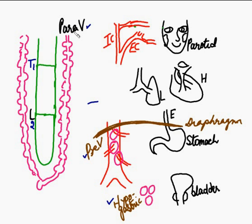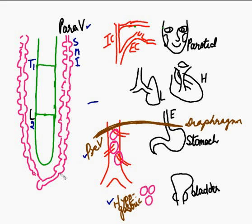Regarding the paravertebral ganglia, they are connected to the spinal nerves. In the cervical region there are only three ganglia: the superior, middle, and inferior cervical ganglia. In the thoracic region there are eleven, five in the lumbar and sacral, and then they join together to form a single ganglion known as the ganglion impar.